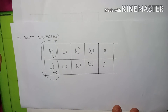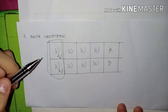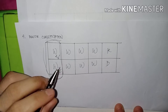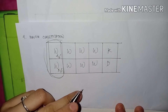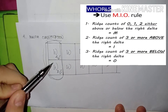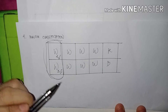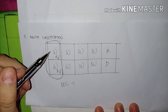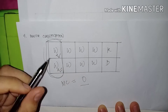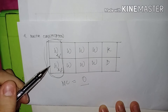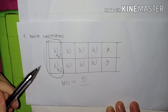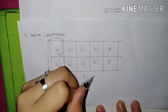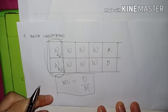This is the major classification. In major classification, only the thumbs are involved. We apply the MIO rule. The right thumb has 4 ridge counts below the delta, which falls into Outer — so O. The left thumb has 2 ridge counts below the delta, which is 0 to 2, so it falls into Meeting. The result of our major classification is Outer over Meeting, or O over M.